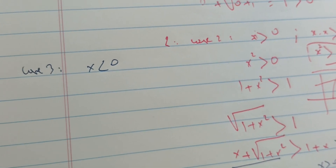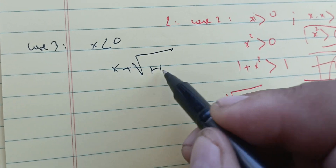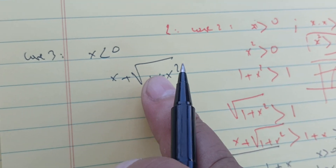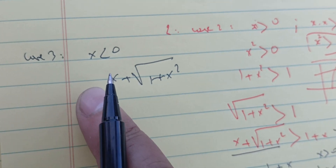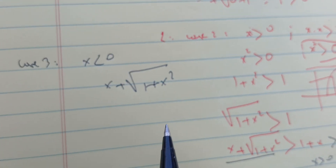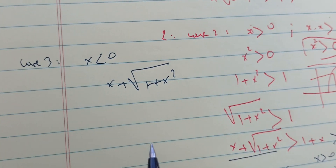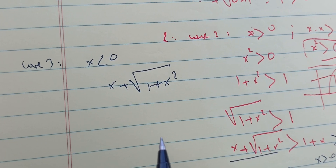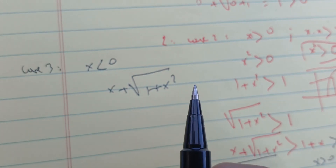Case three: x is less than zero. We have x plus the square root of one plus x squared, where x is negative and the square root is positive, so we don't immediately know which one is bigger.